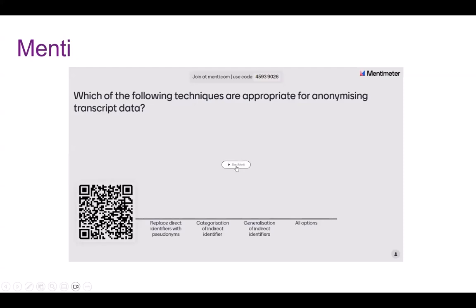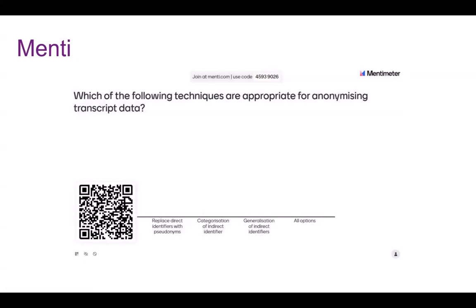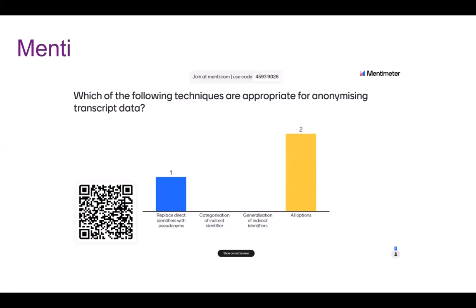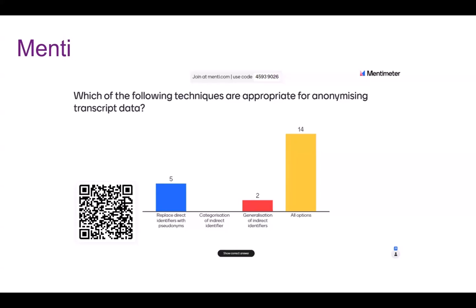We have a little more Mentimeter now, thinking about some of the techniques I've just gone through — recoding, top and bottom coding, banding, categorization, and generalization. Which of the following techniques are appropriate for anonymizing transcript data? Excellent — we've got people saying largely all of the options. Any of the options would be correct. We're going to go ahead and show the correct answer — all options are good for this one.